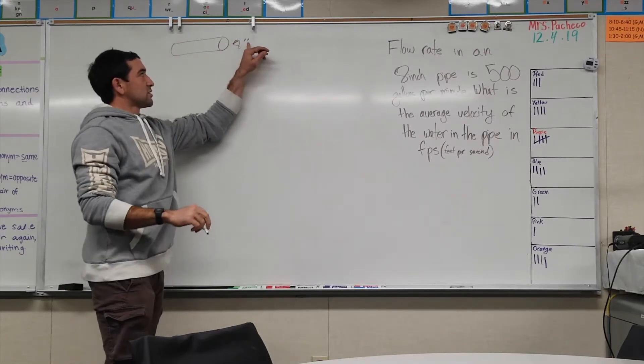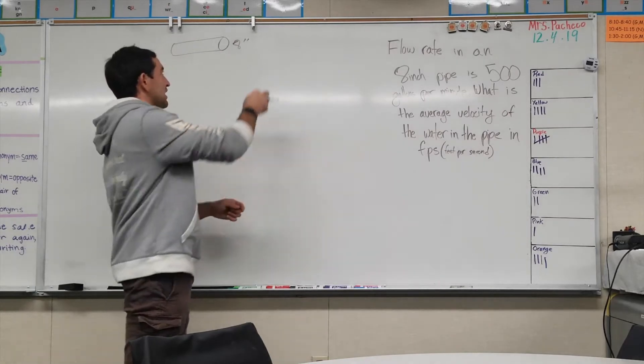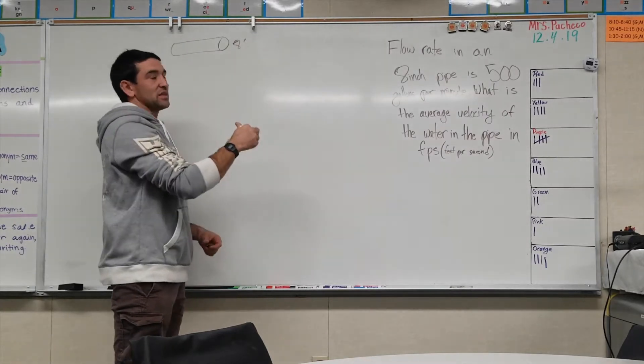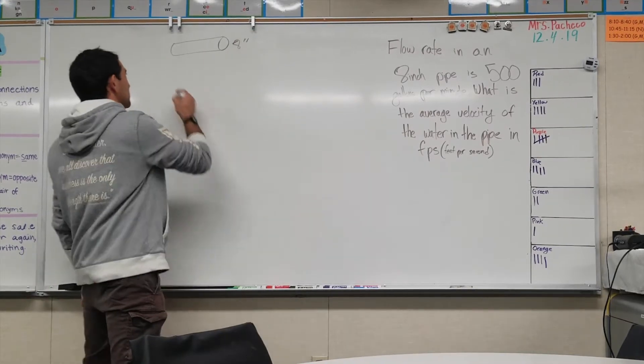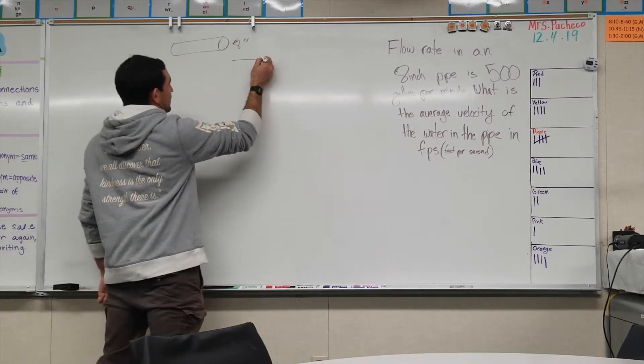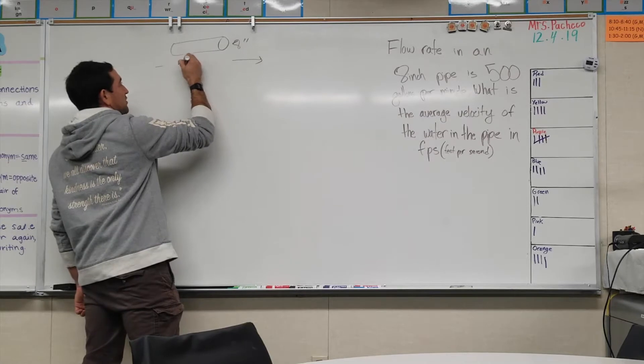The double quotations is inches and the single quotation is feet. So this is 8 inches, the 8 inch pipe.